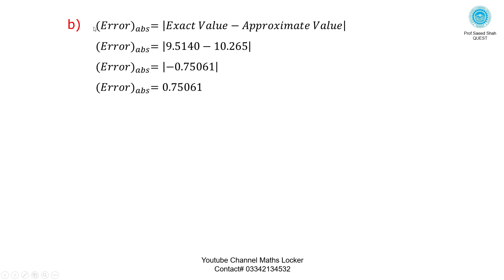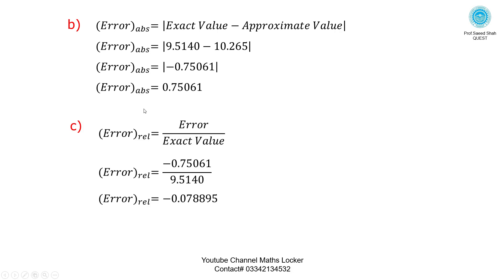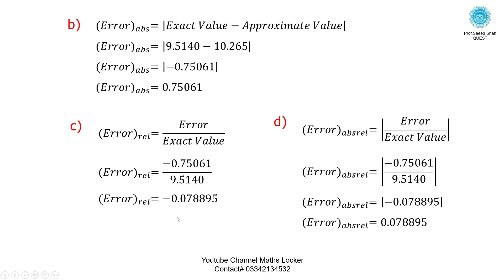Similarly, using the absolute error formula: absolute value of exact value minus approximate value, putting the values gives absolute error equal to 0.75. For relative error: error divided by exact value, putting the values gives the relative error. For absolute relative error: putting the values gives the absolute relative error.